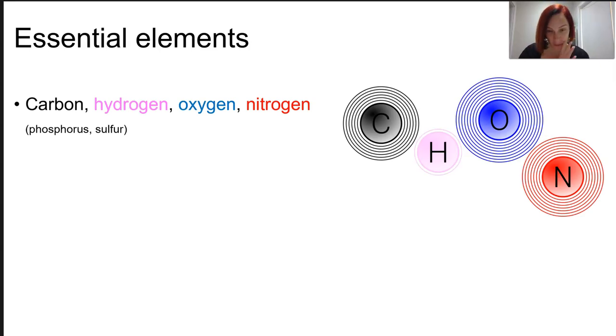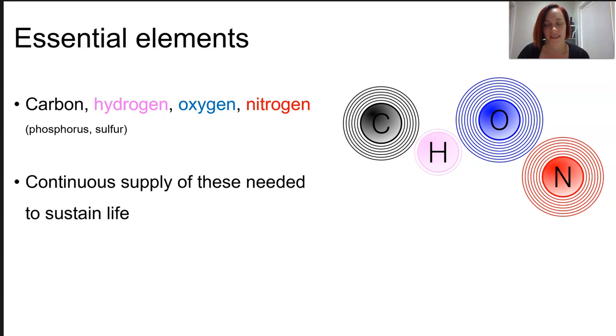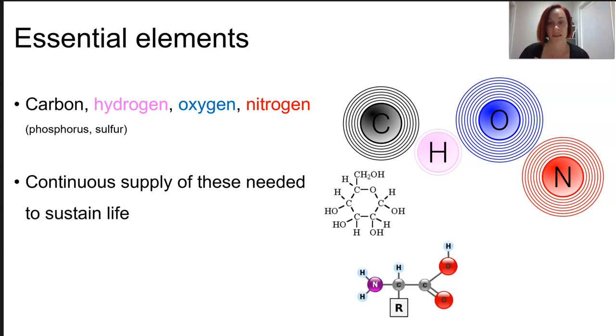The elements most important to living organisms are carbon, hydrogen, nitrogen and oxygen. Also phosphorus and sulfur, we're not talking about them today. So we need a continuous supply of these elements in order for the survival of all organisms to continue. So we're talking things like glucose and amino acids. We absolutely could not live without those two things and many others.